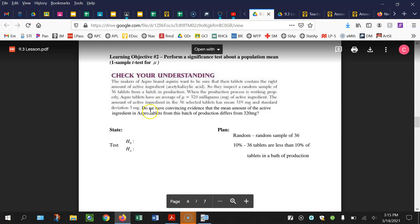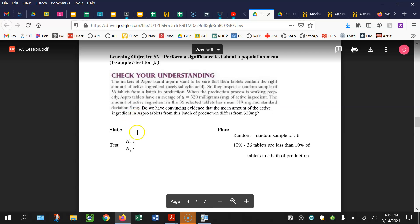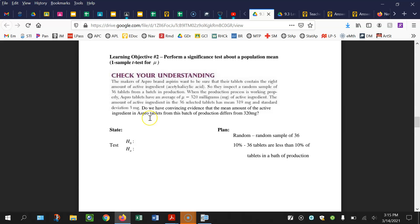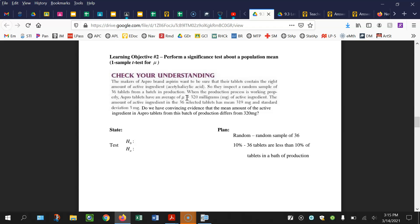For the state step, do we have convincing evidence the mean amount of active ingredient in ASPRO tablets differs from 320? Mu would be the true mean amount of the active ingredient in the ASPRO tablets. The null would be mu equals 320. The alternative, does it differ? Mu is not equal to 320. Alpha is 0.05.